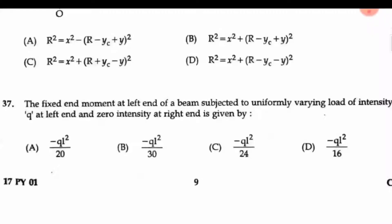Here the UVL is there over a fixed beam. The left end has q intensity and right end has zero intensity. The fixed head moment will be -qL²/20, so option A is the right answer.